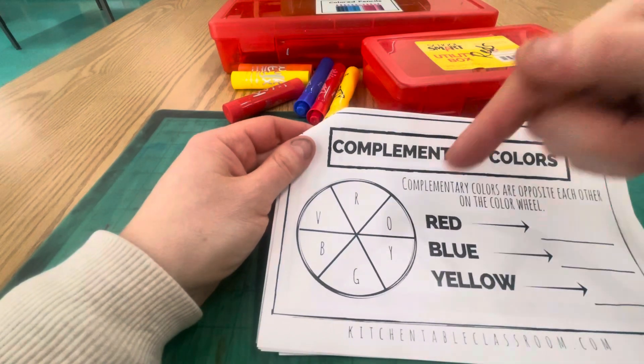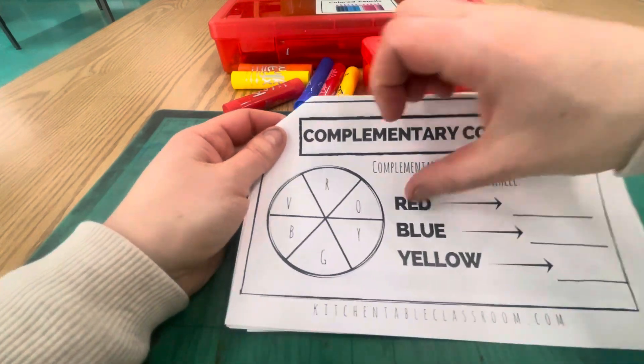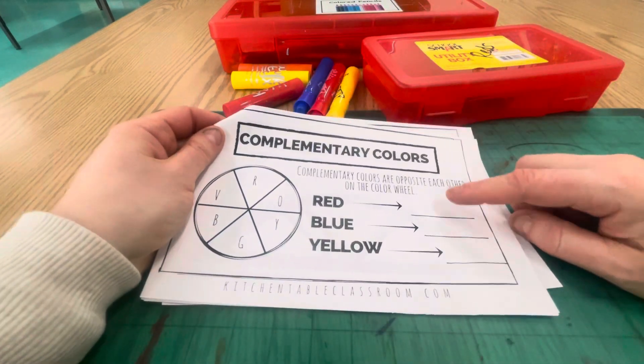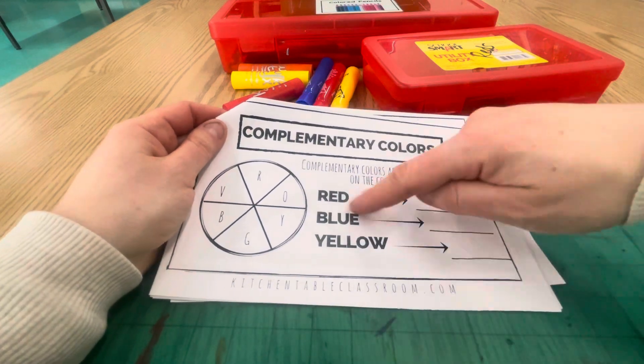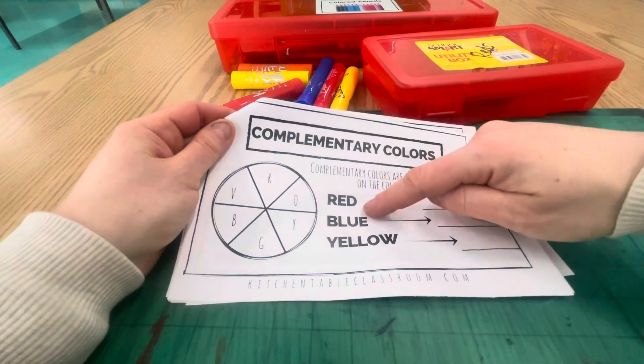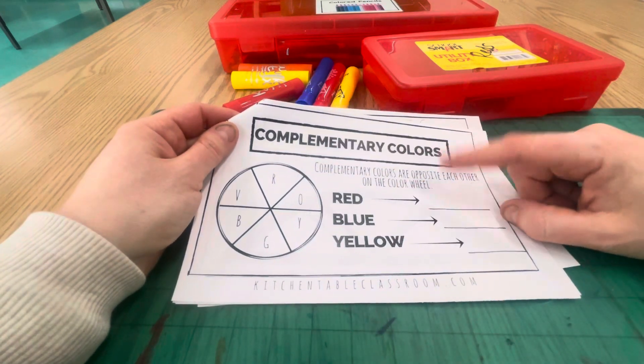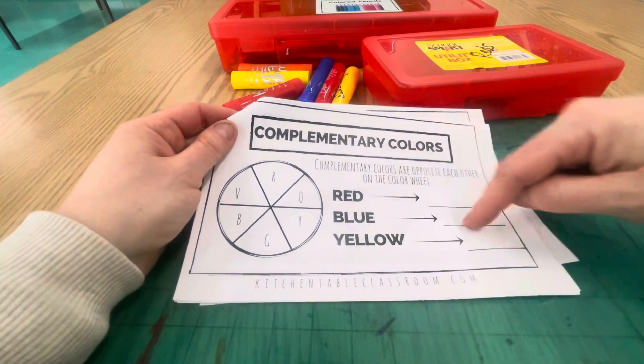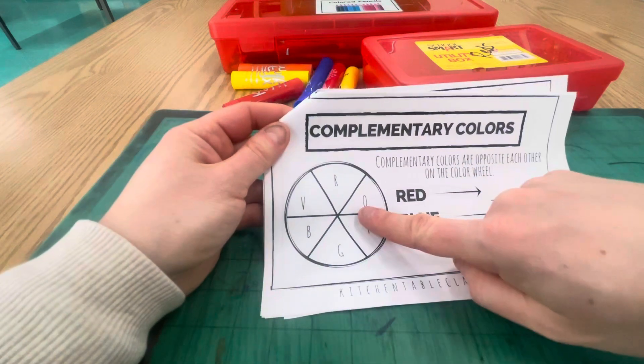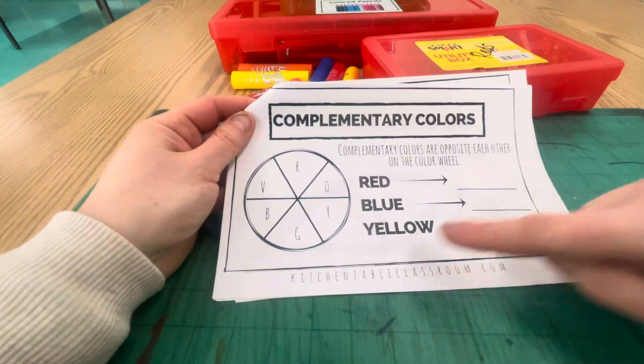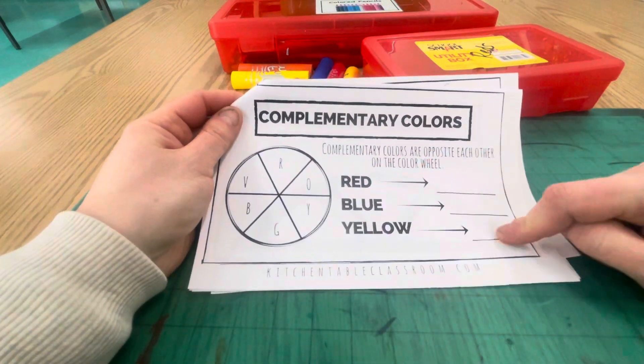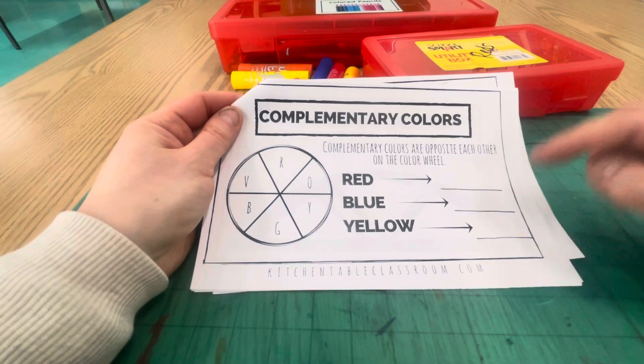You could use markers, crayons, colored pencils, paint sticks. Then you're going to write here the complement color that goes across from this in the color wheel. What goes across from red? We know that the complement of red is green. What goes across from blue? We know that across from that on the color wheel is orange. Across from yellow is violet, or you could even write purple.